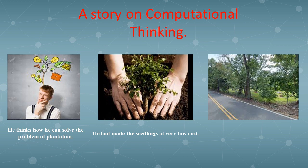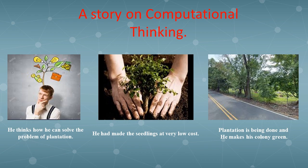He first breaks this massive task into smaller ones, studies each subtask individually, and works a step-by-step solution for each task. As a result, Aryan succeeds in getting 1000 new trees planted and his colony is now green again. Now the question is, how does Aryan accomplish this task successfully in spite of being new to it? He does it by using a technique called computational thinking.